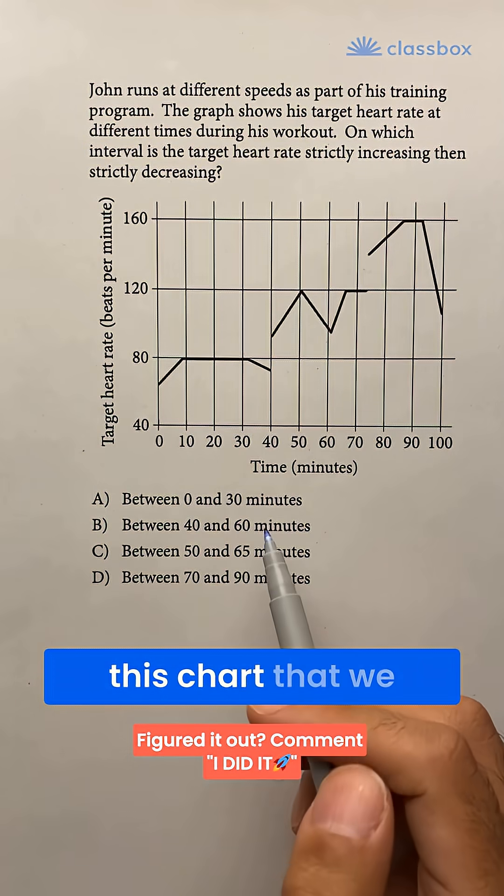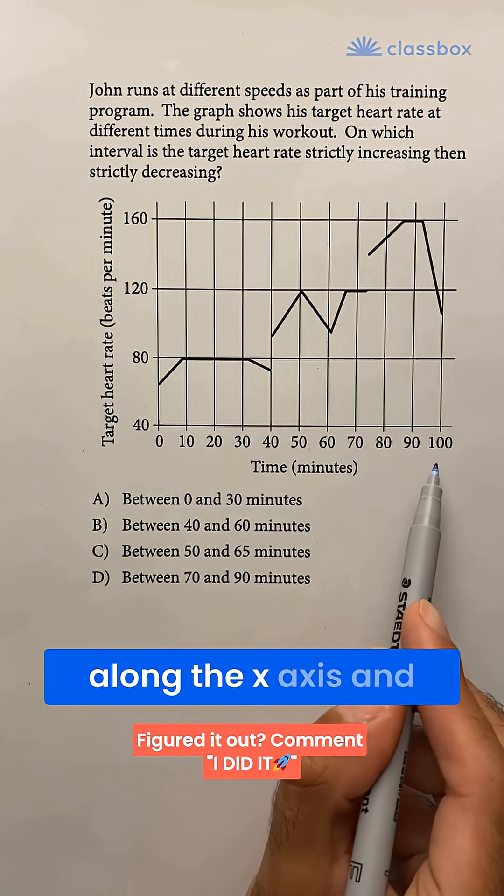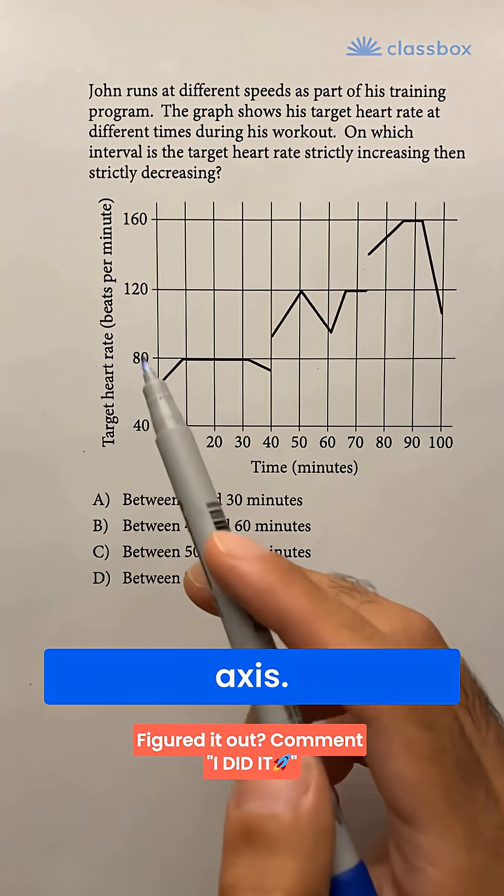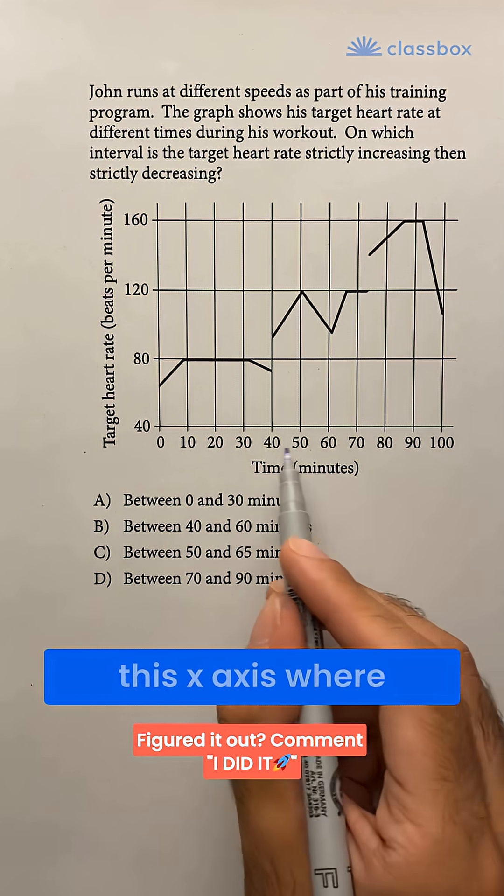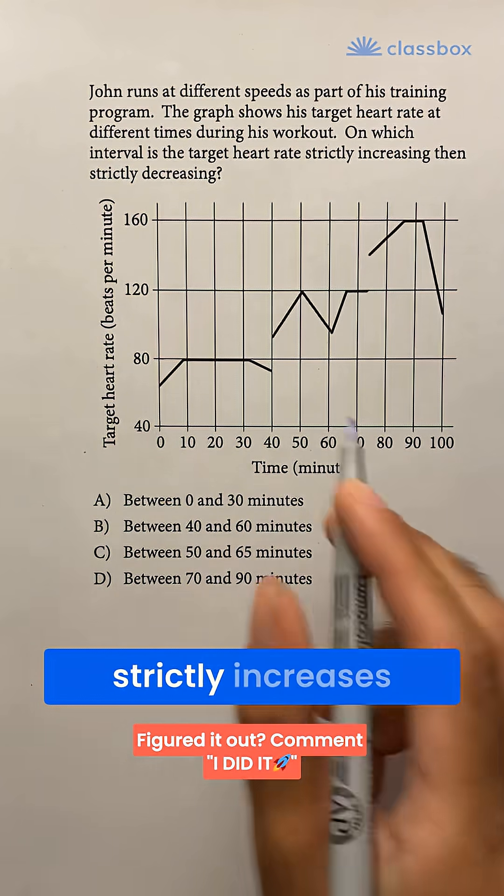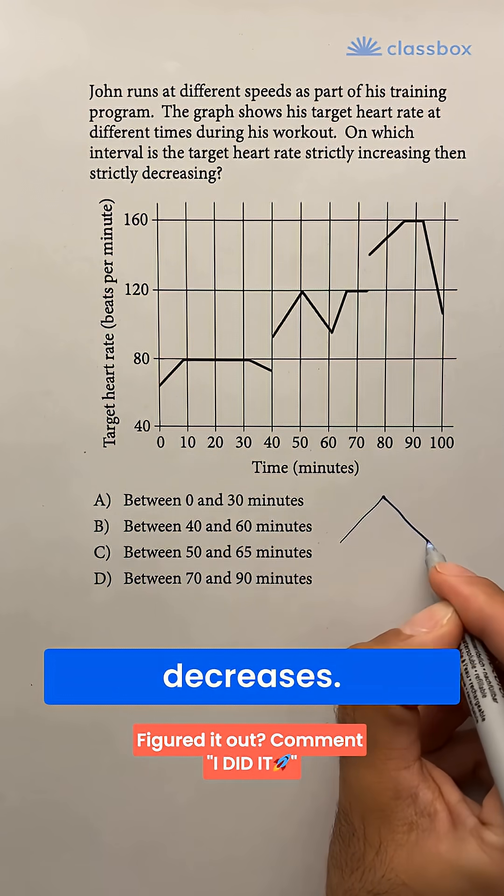We can see on this chart that we have time in minutes along the x-axis and the target heart rate in beats per minute along the y-axis. We're looking for an interval along this x-axis where the heart rate along the y-axis strictly increases and then strictly decreases.